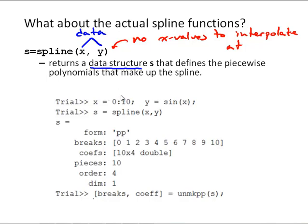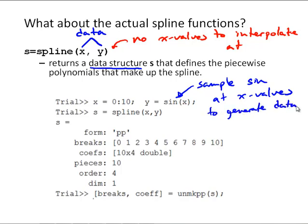So here is an example of how this works. Here is data x. We will set up some data points, x being integer values from 0 to 10. And then we will sample the sine function. So we are going to sample sine at those x values to generate some data, and then use the spline function to fit a spline to that data. So we are going to approximate that sine curve with a cubic spline. And you see we haven't given it any specific data points here. This third input is left out, and so s returns a data structure.